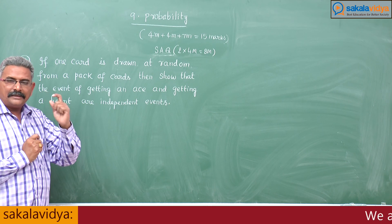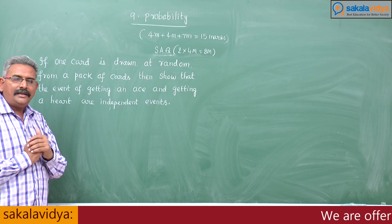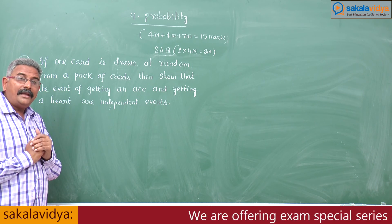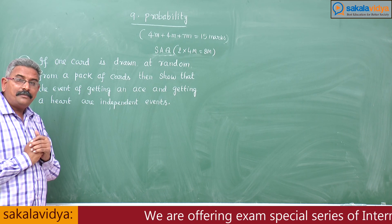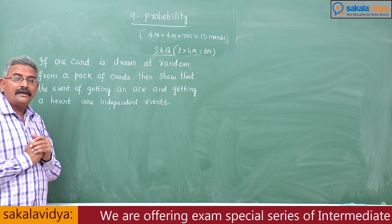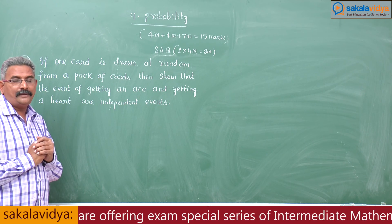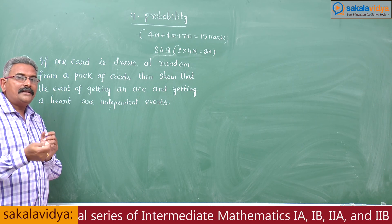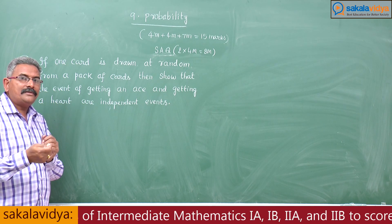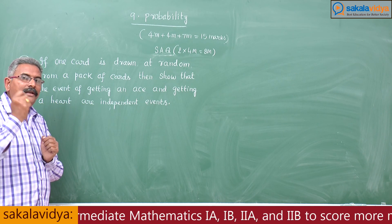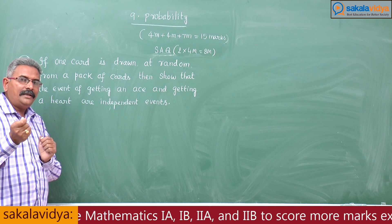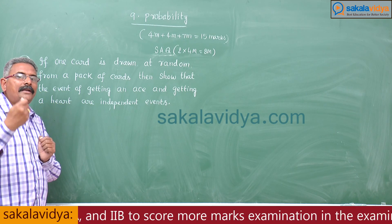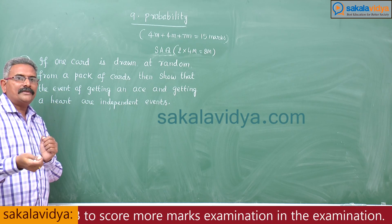Mathematically, it is enough to prove that P of A intersection B is equal to P of A into P of B. If P of A intersection B is equal to P of A into P of B, then A and B are said to be independent events.